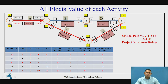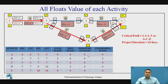For the independent float of activity A, EST of the succeeding activity is 3, and since there is no preceding activity, LFT is taken as 0. So independent float = 3 minus 0 minus 3 = 0. The interfering float is total float minus free float = 0 minus 0 = 0. Activity A has all floats equal to 0, confirming it is a critical activity that must start and finish as defined.